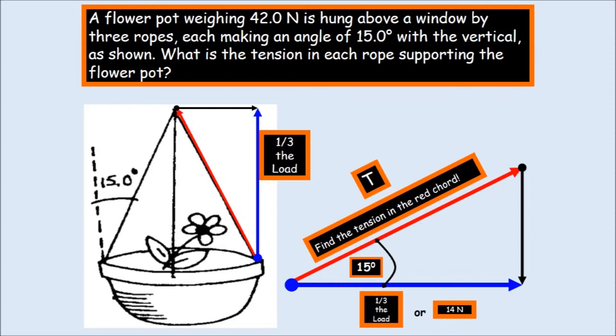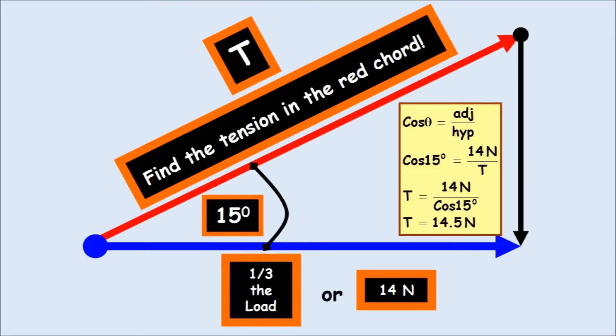We need to find out what t is of the red line. And it's 15 degrees. And so the math is going to be fairly straightforward here. You see that it's a cosine function. So it will be the cosine 15 degrees equals 14 newtons over t. Solving for t, you get 14.5 newtons.